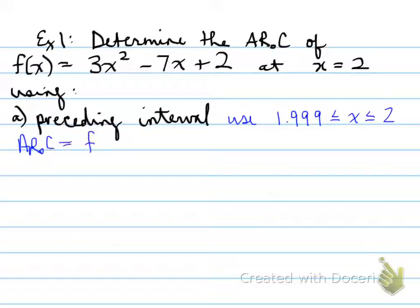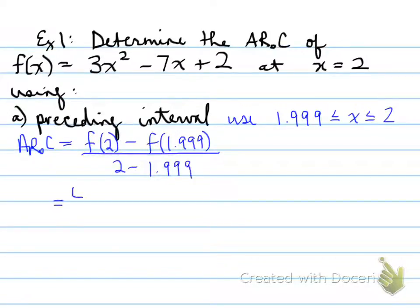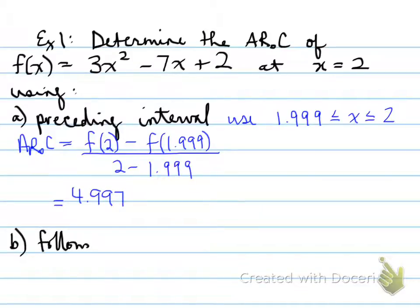So the average rate of change is going to be f at 2 minus f at 1.999, divided by the interval width. As long as you show this step, you won't need to show the plug-in step. Once you plug it into your calculator, the value you get is 4.997. This is a very close approximation to 5.